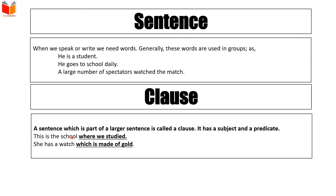مثال کے طور پر: 'This is a school where we studied۔' اب 'where we studied' یہ clause ہے، اور 'this is the school' اور 'where we studied' یہ دونوں مل کر ایک sentence بناتے ہیں۔ اگلی example: 'She has a watch which is made of gold۔' 'She has a watch' ایک حصہ ہے اور 'which is made of gold' دوسرا حصہ — یہ دونوں مل کر ایک sentence بناتے ہیں۔